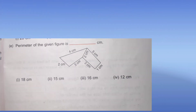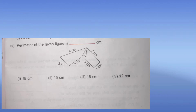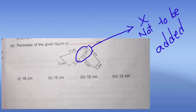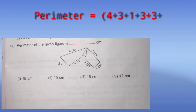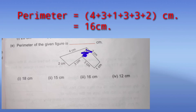Next: find the perimeter of the given figure. In the figure, there is also a line segment of 2 cm in the middle. We will NOT consider it for the perimeter because the middle line is not forming the border. Perimeter is only the total boundary length. So we add all the outer sides: 4 + 3 + 1 + 3 + 3 + 2 = 16 cm.